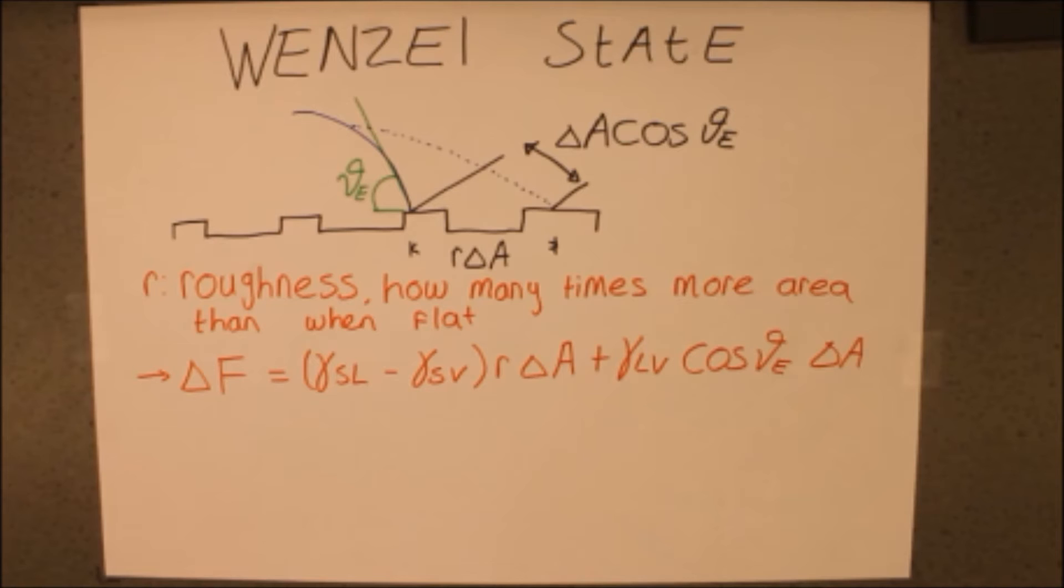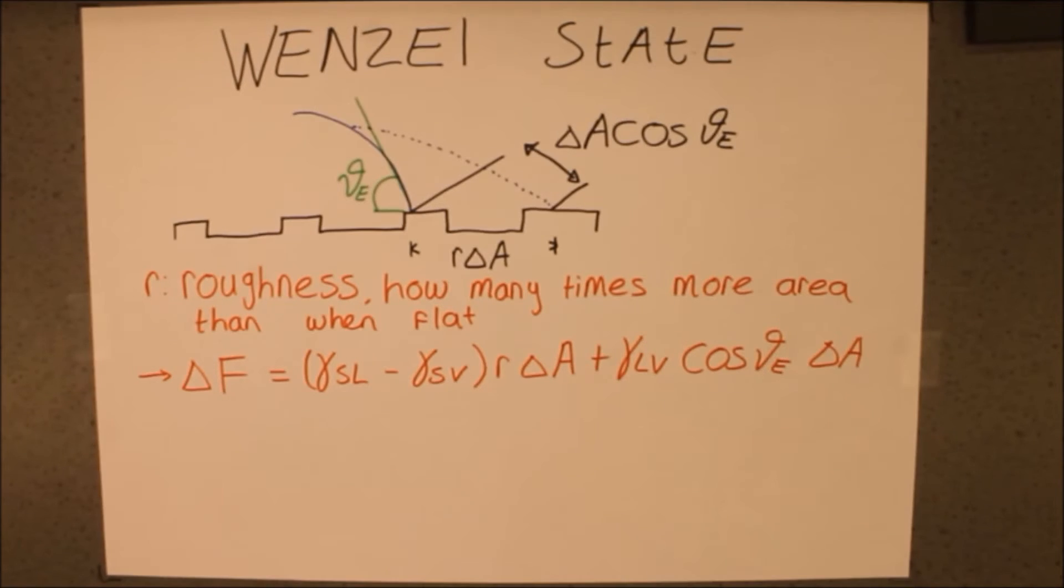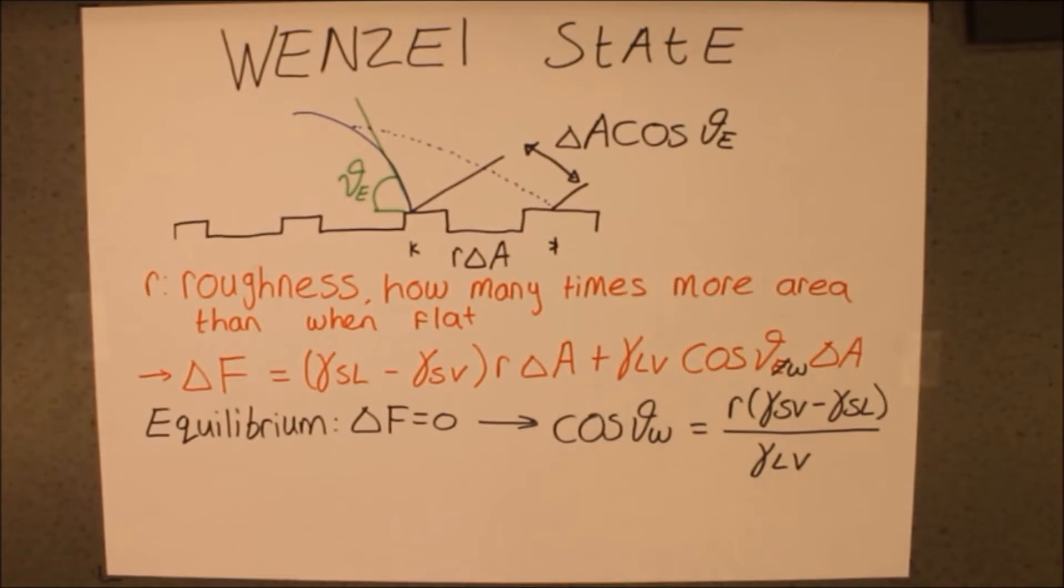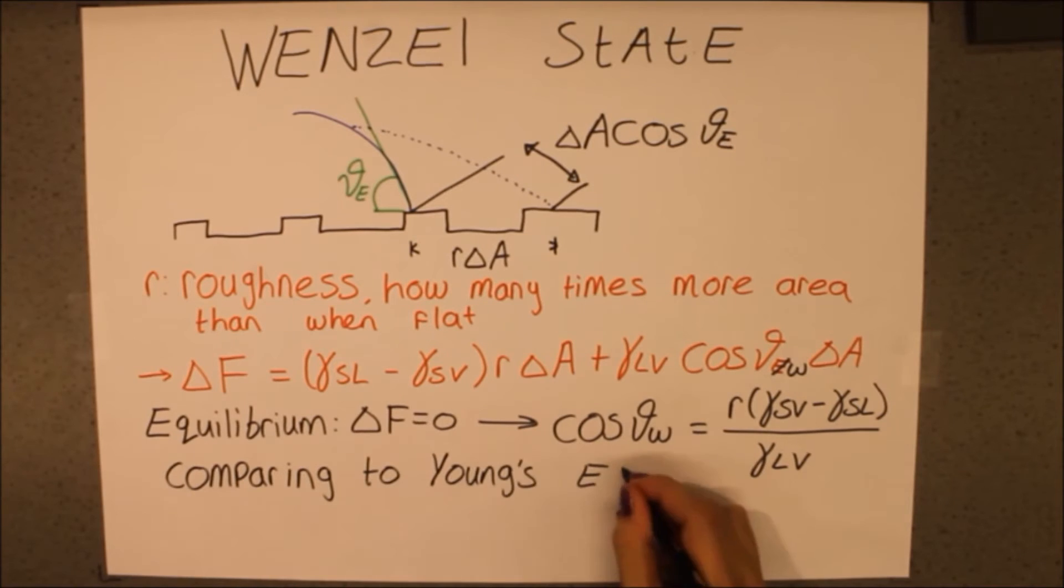Since in the second term, the only thing that changes is the equilibrium angle, which we now call the Wenzel angle. Looking at the equilibrium state, we find a relation similar to Jung's equation. By comparing the two, we find the Wenzel equation.